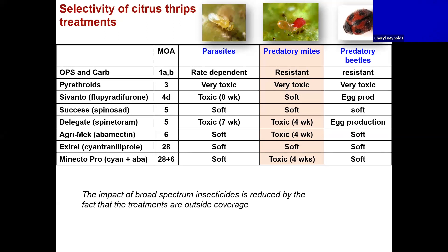Question from the chat: What was the rate of Veritran and molasses? I don't have that off the top of my head — I would say look at the UC IPM guidelines and you would be able to find that there.